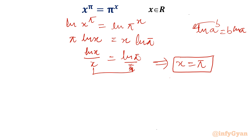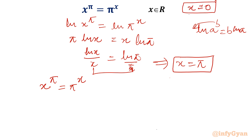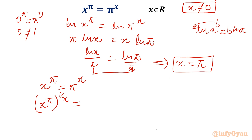Our equation is x^π = π^x. Note that x = 0 is not a solution — putting x = 0 gives 0^π = π^0, i.e., 0 ≠ 1. So we can raise both sides to the power 1/x, giving (x^π)^(1/x) = π.